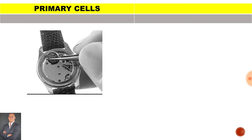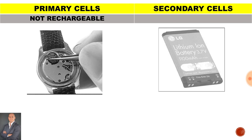A good example of a primary cell is a watch battery; however, the disadvantage is that it is not rechargeable. A good example of a secondary cell is a cell phone battery, and the big advantage is that it is rechargeable.